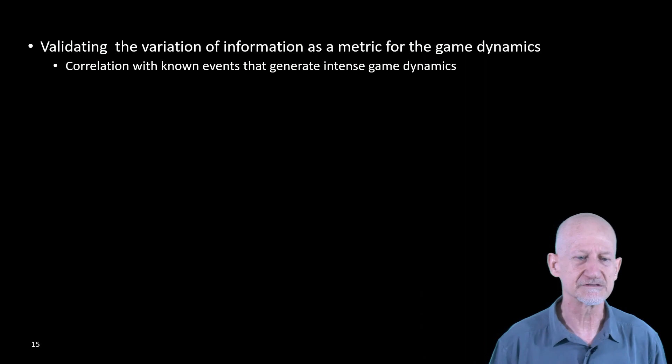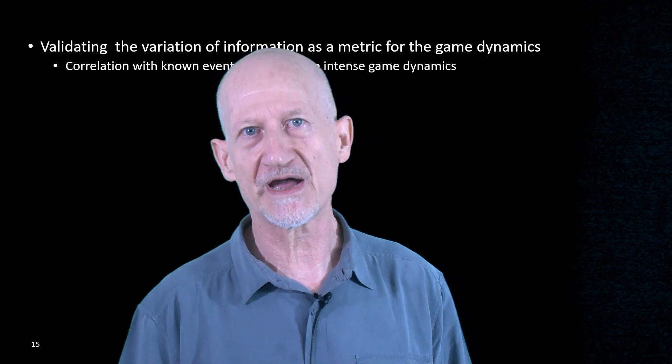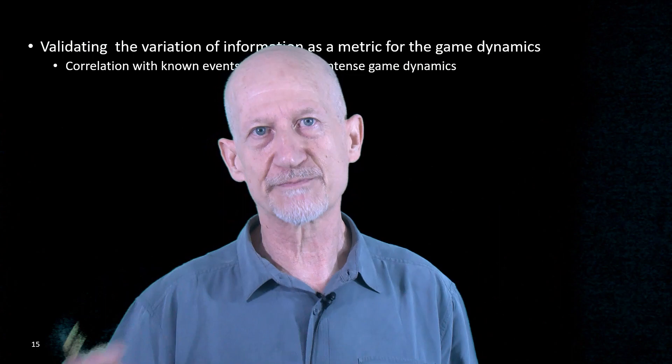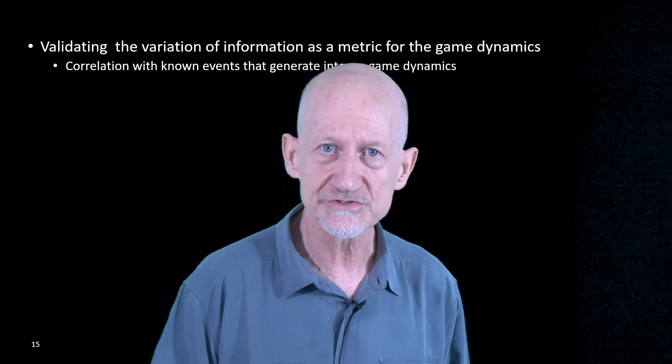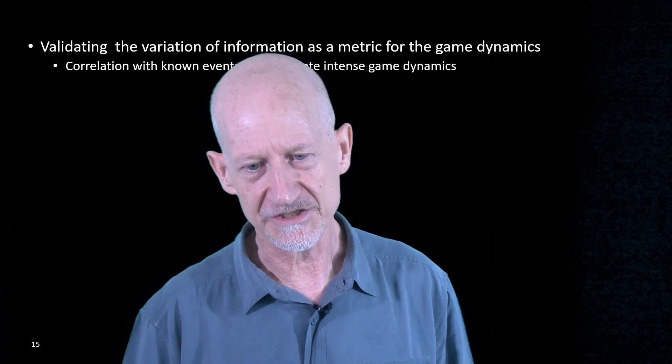How do we validate this metric as a proxy for game dynamics? Basically we look for correlation between known events that generate a spike in the game dynamics with a spike in variation of information. We found, we used corners for that. Why did we use corners? Because they're frequent, and I think no one would dispute that they generate a lot of dynamics during the game.